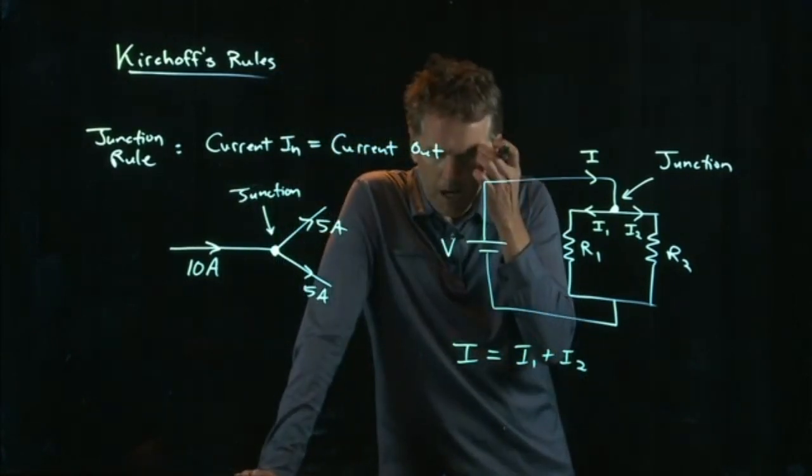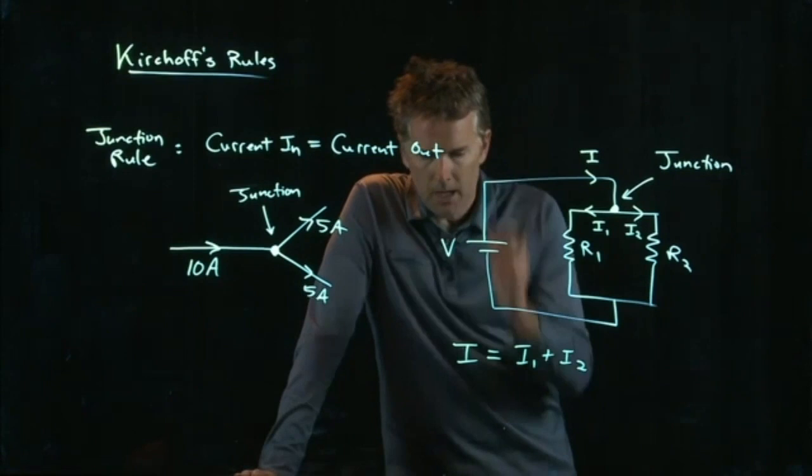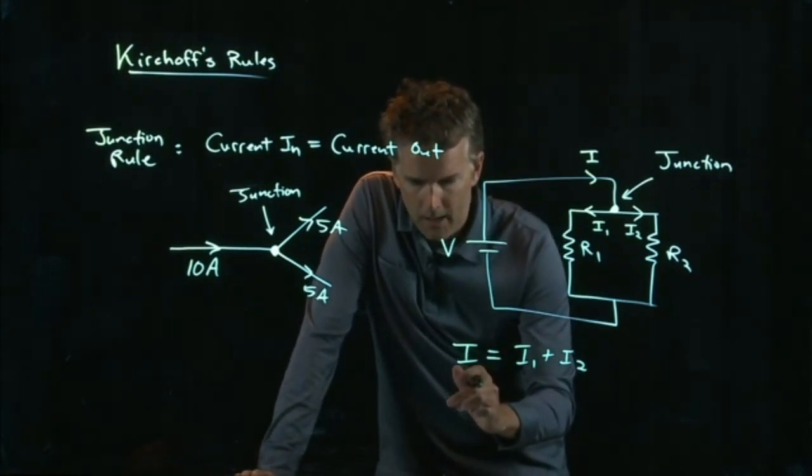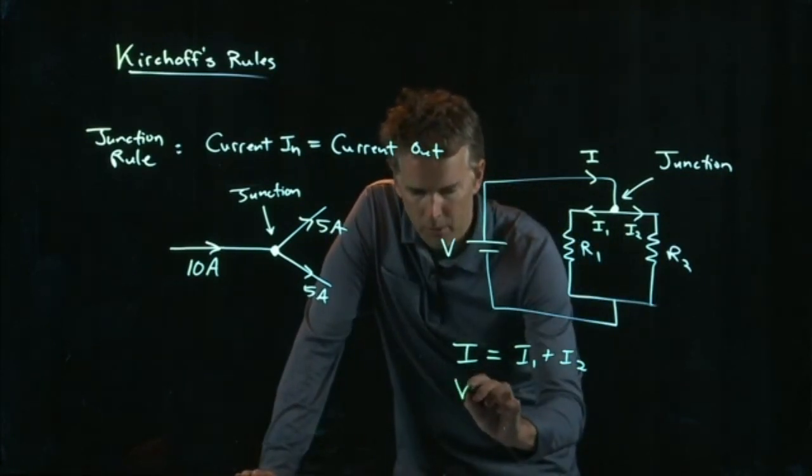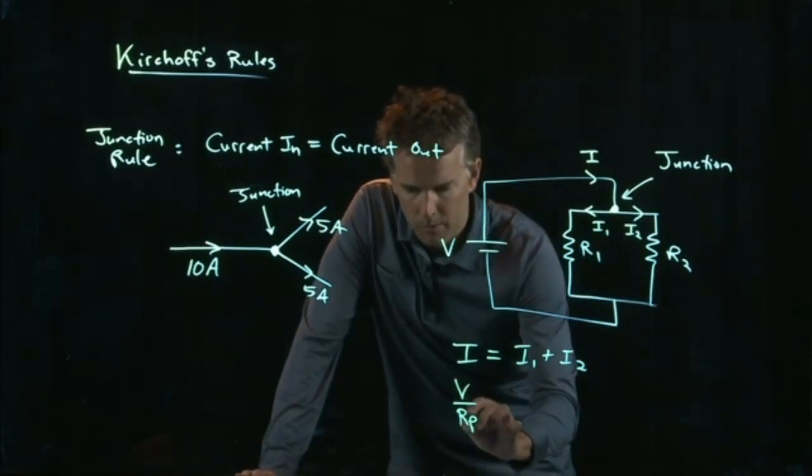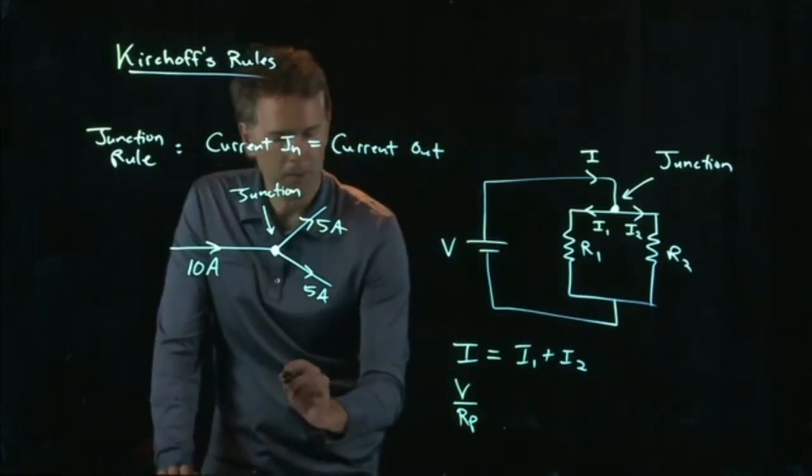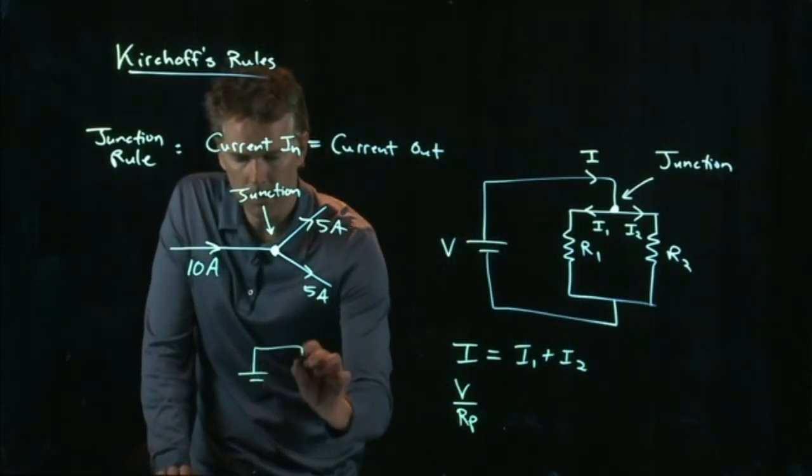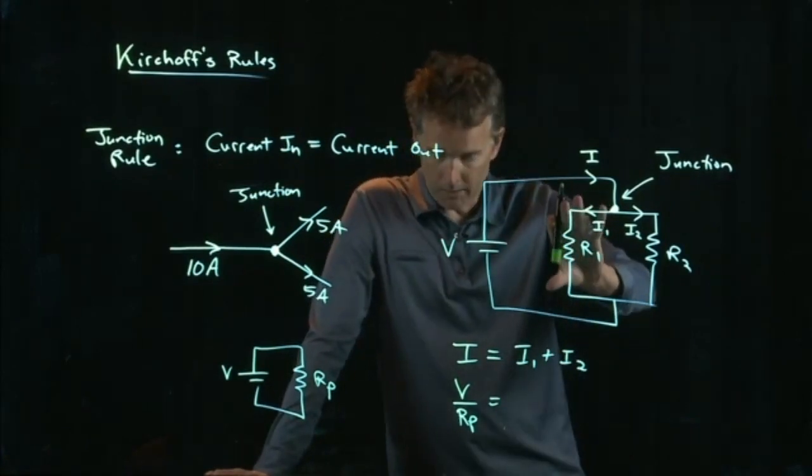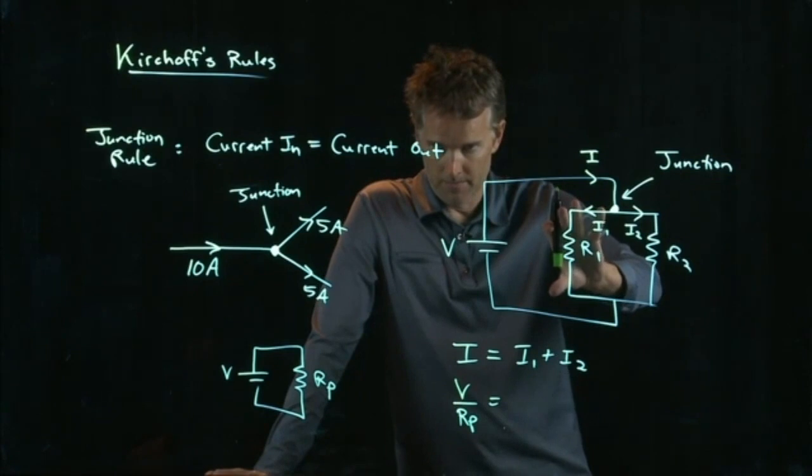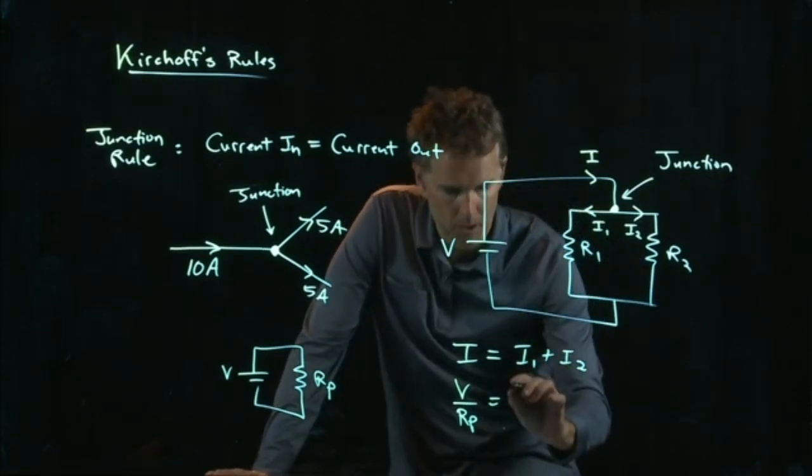But we know what I is. I is the same as voltage over equivalent resistance of the whole thing, which is R parallel, because that circuit we can draw like this. I1 is whatever voltage is across R1 divided by R1.